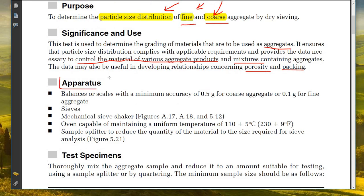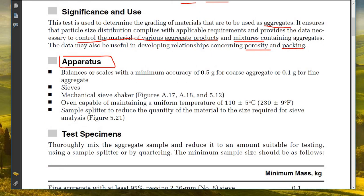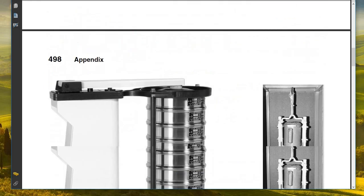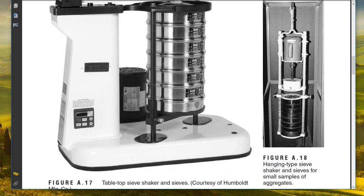The apparatus we are going to use: first, balances or scales — already provided in our lab — with a minimum accuracy of 0.5g for coarse aggregate and 0.1g for fine aggregate. After that, sieves — as you can see in the video we have different sieves — and after that a mechanical sieve shaker.